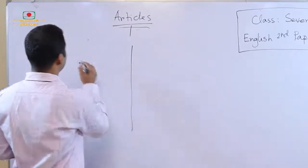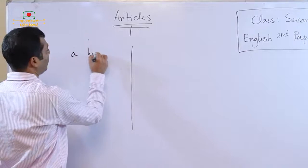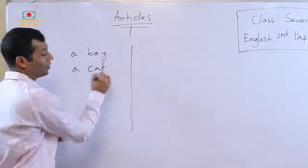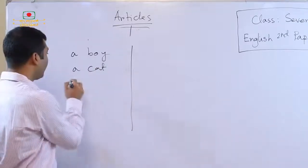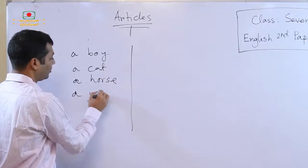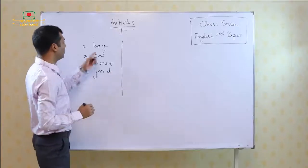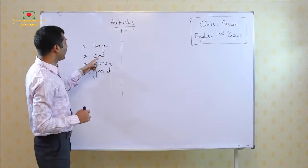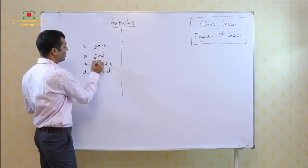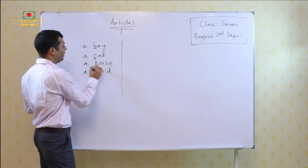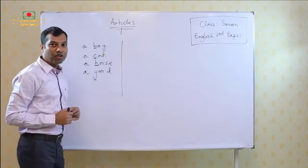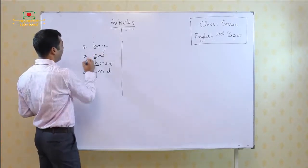For example: a boy, a cat, a horse, a yard. Look at these words — boy, cat, horse, and yard. Every initial sound is a consonant: B, C, H, Y. These are consonant sounds. Only for this we have used the article A here.